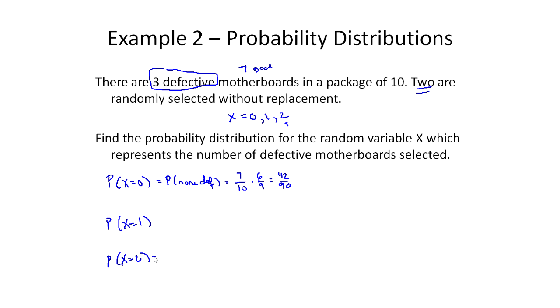I'm going to save x equals one. Let's look at x equals two—this is the probability both are bad, both are defective, because x is counting the number of defective motherboards. So the probability the first one is defective is three out of ten. The probability the second one is—now we've taken one out—so it's two out of nine, so this is six out of 90.